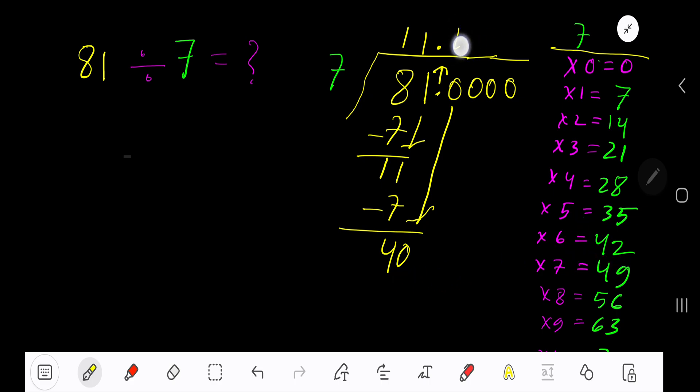Bring down another zero. 7 goes into 50 how many times? 8 times 56 which is greater, so 7 times. 7 times 7 is 49.